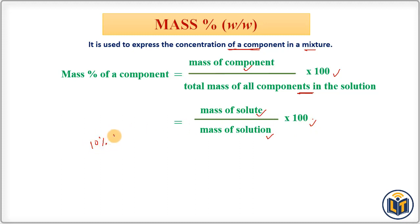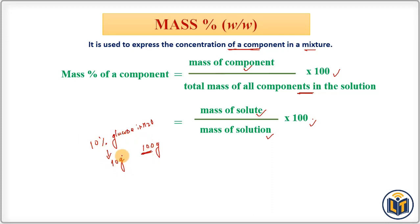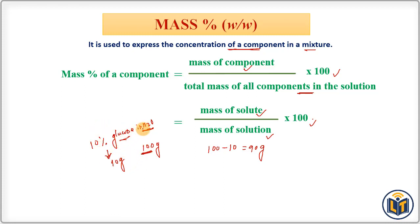Let's say we have a 10% glucose solution in water. Since a percentage is given, the total quantity of solution is taken as 100 grams. 10% glucose means 10 grams of glucose is present in the solution. The rest is water — subtracting 10 from 100 gives us 90 grams of water as the solvent in 100 grams of solution.